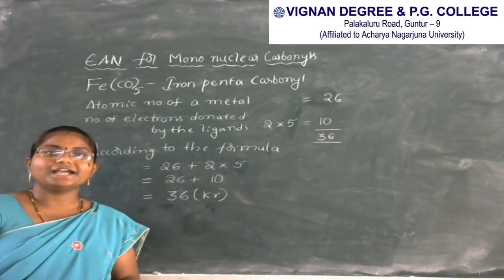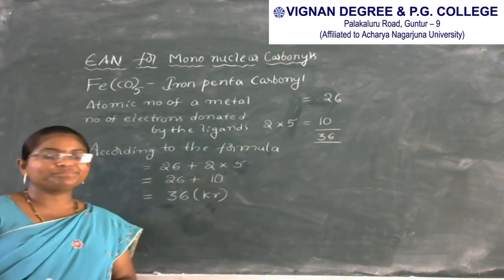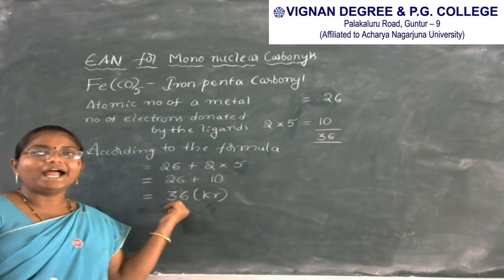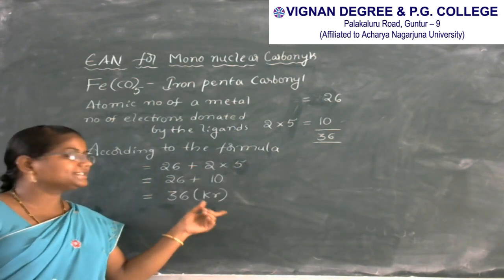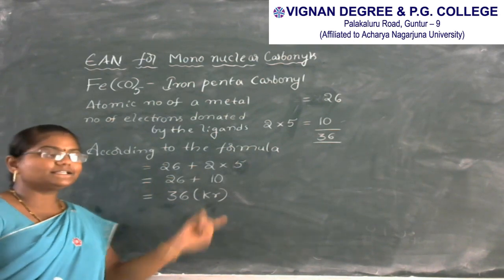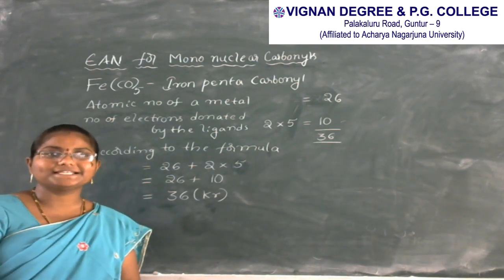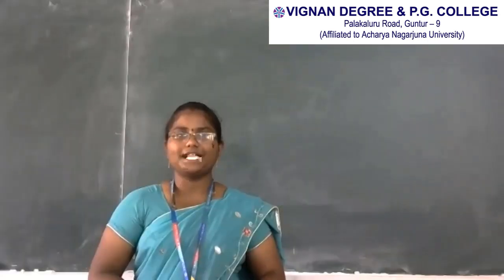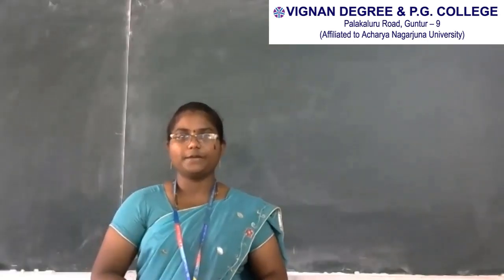The total EAN is equal to the atomic number of the noble gas element krypton. Hence the complex iron pentacarbonyl obeys the EAN rule.